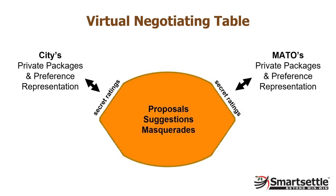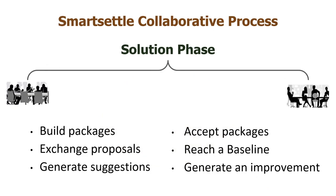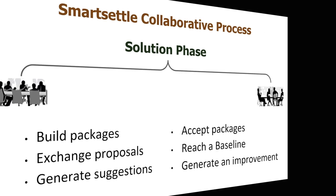With preferences well represented, the parties can negotiate with packages, which is far superior to negotiating issue by issue. The packages that parties create or are generated by the system are automatically assigned confidential ratings for each party. These ratings allow the parties to easily compare proposals and suggestions, and quickly decide whether to accept them. Parties reach a baseline when they have all accepted the same package, and if preferences are well represented, SmartSettle can be asked to find an improvement if there is any value left on the table. Let's move now to the SmartSettle interface and see how the solution phase plays out from METO's point of view.